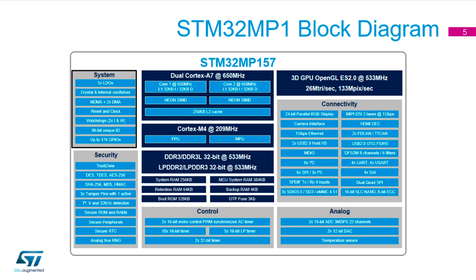In the middle of the diagram is the DDR3 or LPDDR interface, plus all the internal memories: system SRAM, MCU SRAM, and backup SRAM, each segmented for different functions. As an STM32 product, all the standard control and connectivity is present — 32-bit and 16-bit timers, advanced motor control timers, ADCs running at 3 mega-samples per second on 22 channels, and DACs. All the functionality you'd expect from an M4 is still available here.